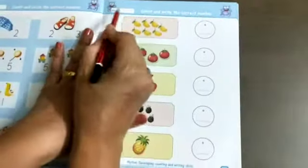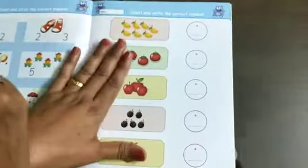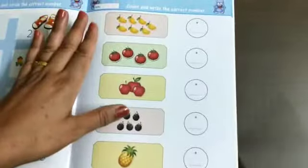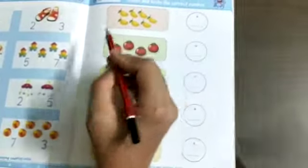Please don't forget to mention the date, your name, and homework first of all. Then what we have to do on this page is we have to count and write the correct number.